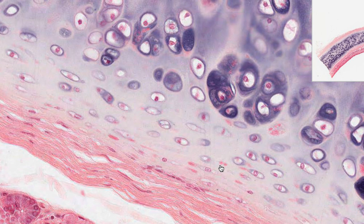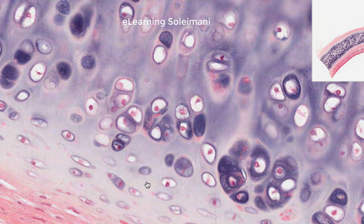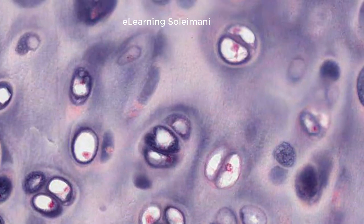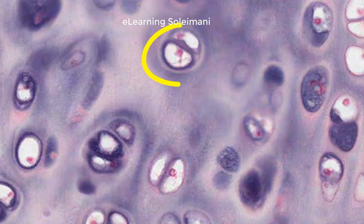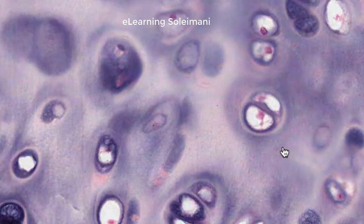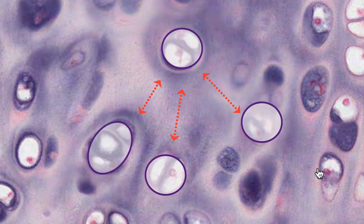These chondroprogenitor cells have the ability to differentiate into chondrocytes, which are responsible for producing and maintaining the extracellular matrix of the hyaline cartilage. As they produce the ECM, or extracellular matrix, they become surrounded by it and are trapped in spaces called lacunae. The interstitial matrix fills the space between the neighboring lacunae.